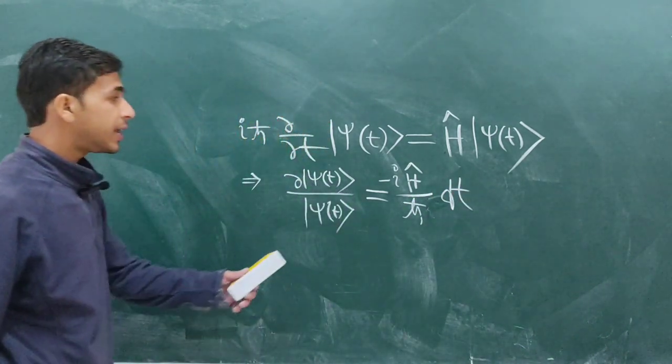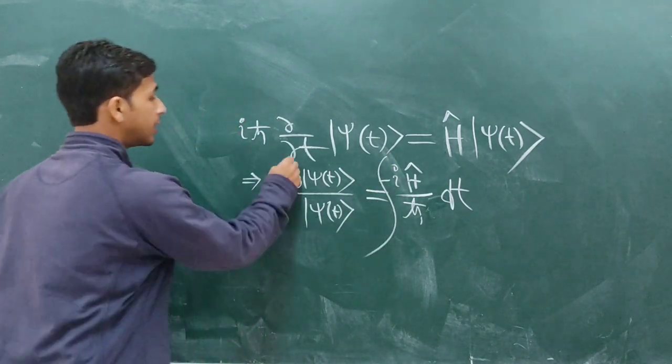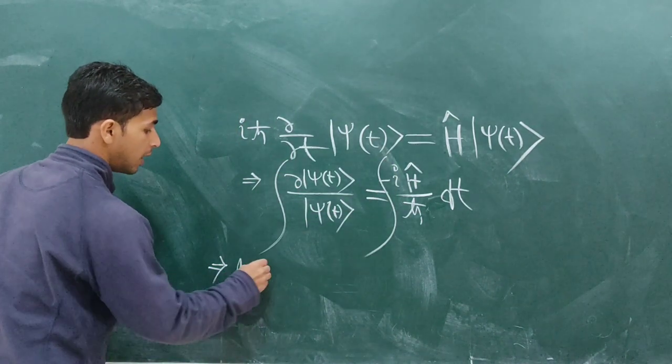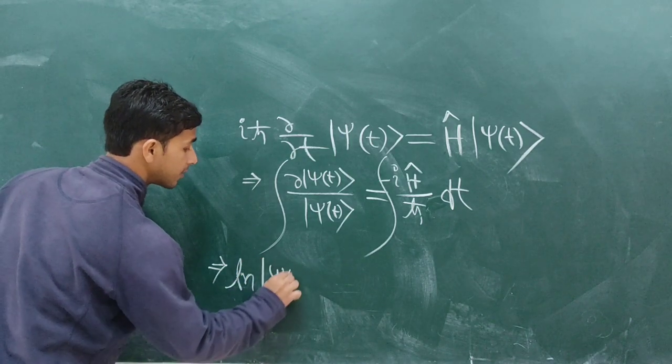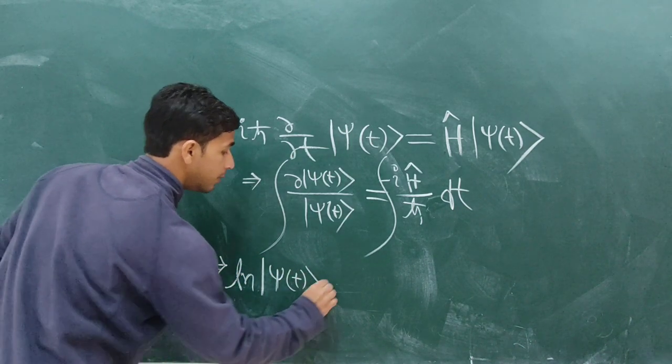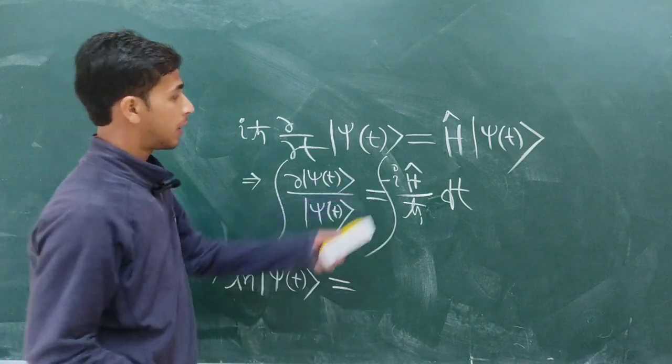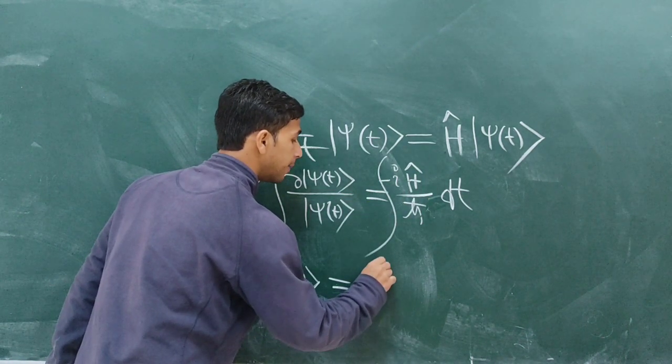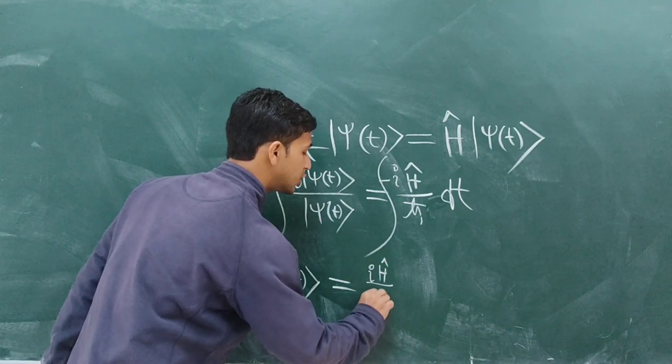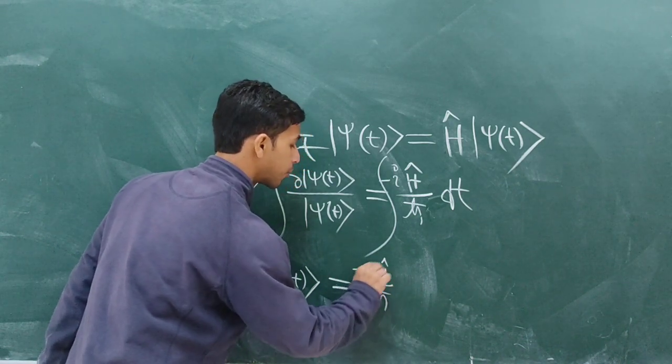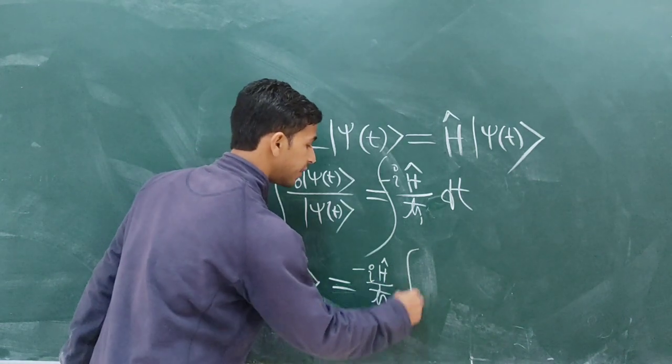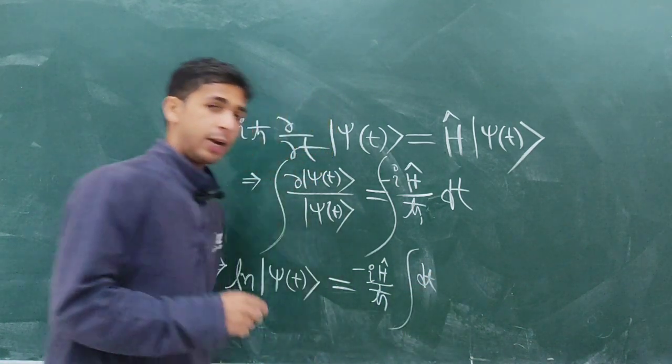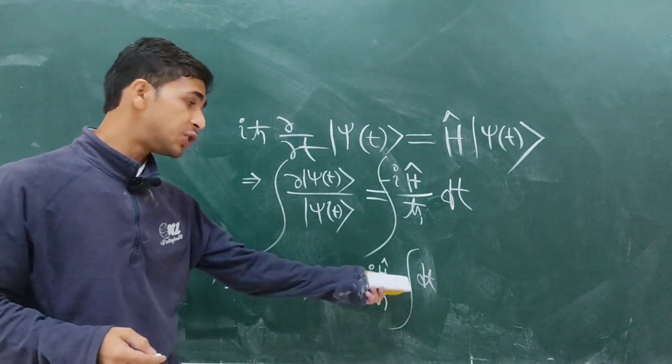And if you take integration on both hand sides, you will get ln ψ(t) will be equals to—this is a constant term—so -iĤ/ℏ times the integration of dt.